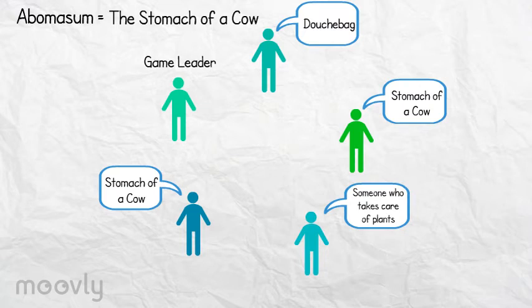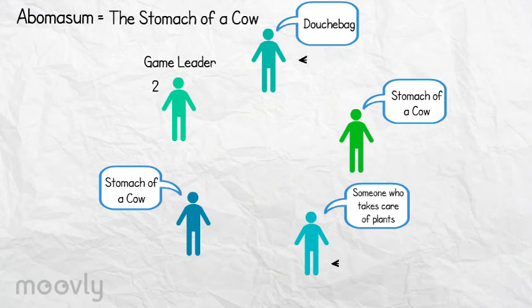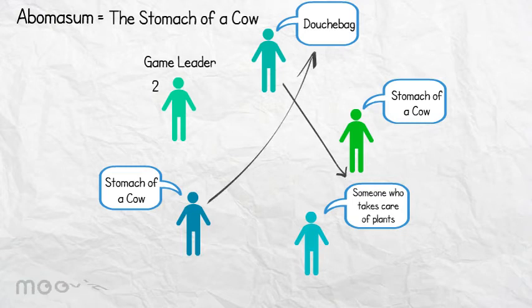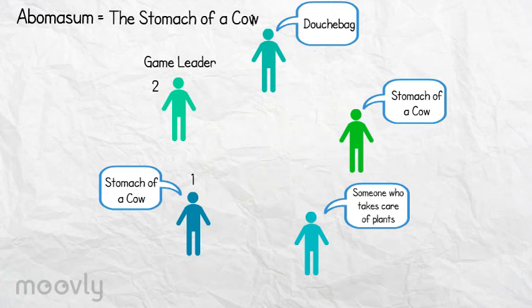The game leader receives one point for each player that didn't guess the real meaning — in this case two points. Each player gets one point for every participant that chose his made-up description as the correct description. And each player gets a point when he chose the right meaning, in this case the stomach of a cow.